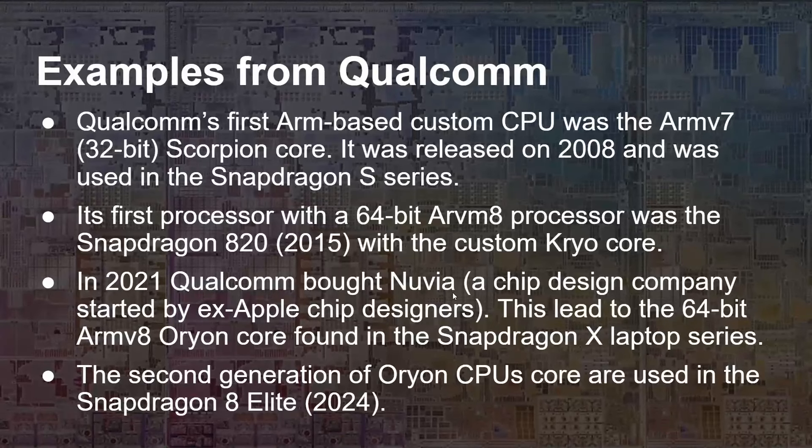Qualcomm's first custom-based CPU was an ARMv7 processor core called the Scorpion core, back in 2008, used in the Snapdragon S series. So Qualcomm has a history going all the way back to the 32-bit era of designing its own custom cores.